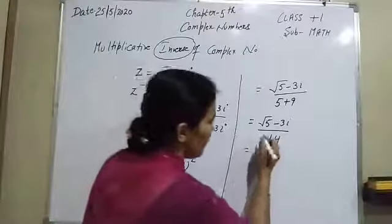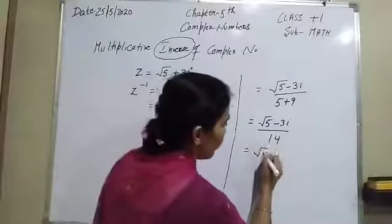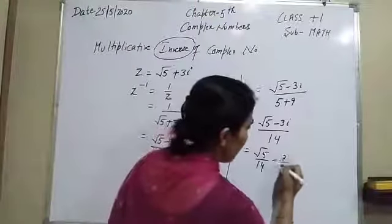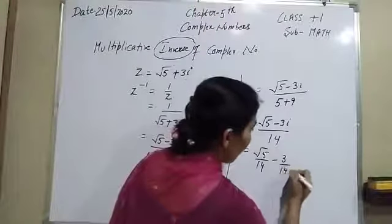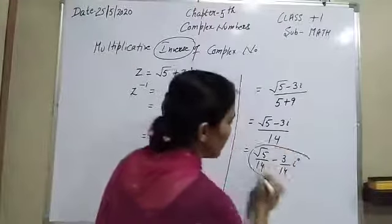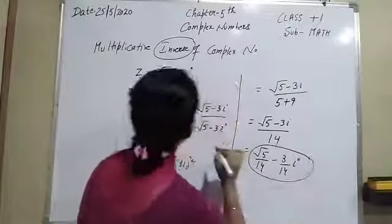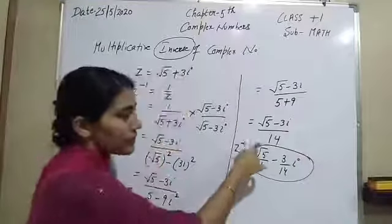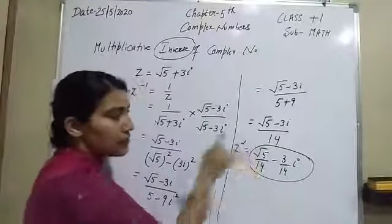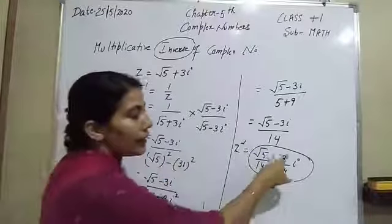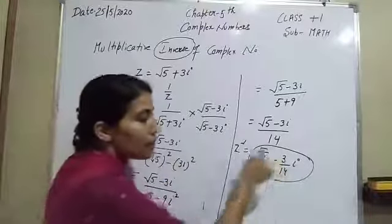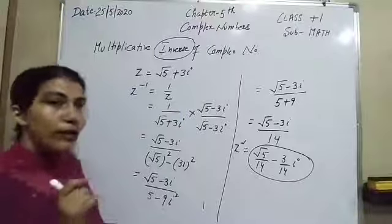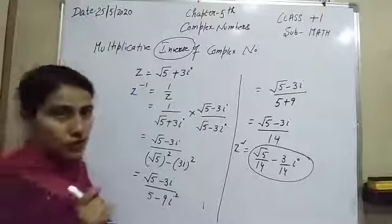After this we have root 5 over 14 minus 3 over 14 eta, which is our multiplicative inverse. So its real part is root 5 over 14 and its imaginary part is minus 3 over 14.